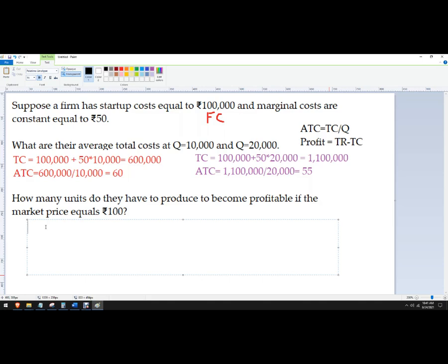So I want a situation where I'm basically breaking even. So I want zero to equal total revenue.